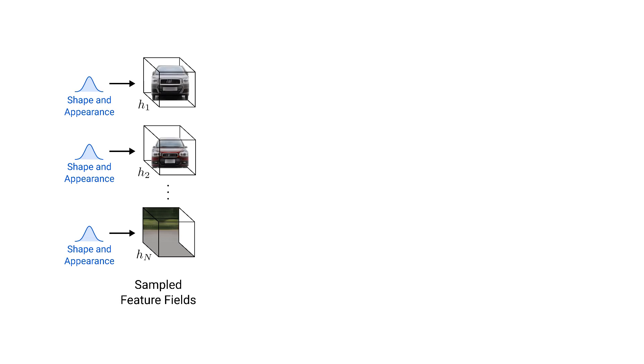A feature field is a function which predicts a density value and a feature vector for a given 3D location and a viewing direction. Note that here we show RGB instead of features for clarity.